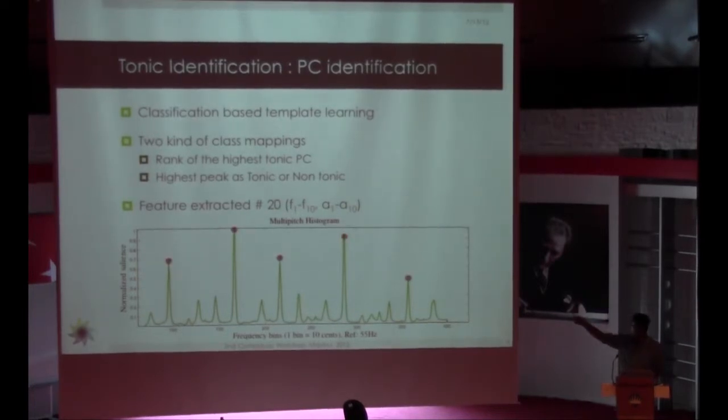We apply classification-based template learning. We want to learn a template using which we will be able to say which of these peaks is actually the tonic pitch class. Because everything is with respect to the tonic, by understanding the relationship between these peaks, we should be able to identify the tonic. We do peak picking on this histogram. I'm showing five peaks, but we actually pick up ten peaks. We see what is the difference between the topmost peak to the other peaks, which is f1, f3, f4 respectively, and also the amplitude ratios. So we land up getting twenty features for every pitch histogram. Then using these twenty features and a class, which is what is the rank of the highest tonic pitch class, we use J48 classifier to learn a basic rule which will maximize the probability in a way that we learn this template.